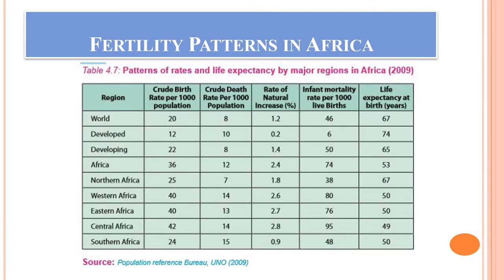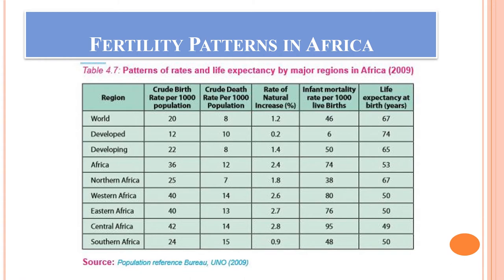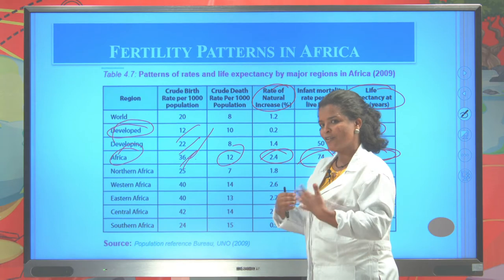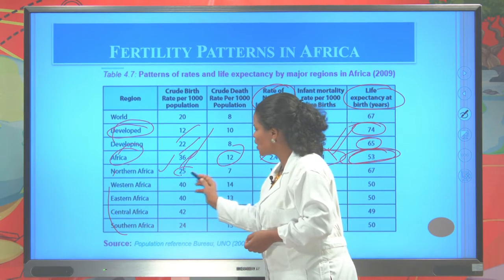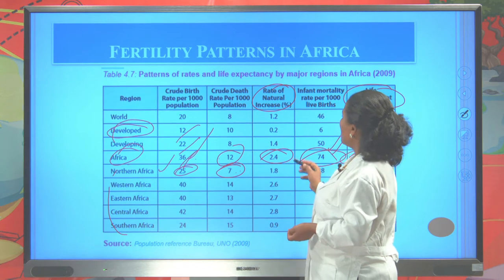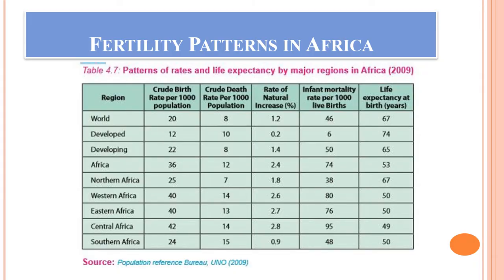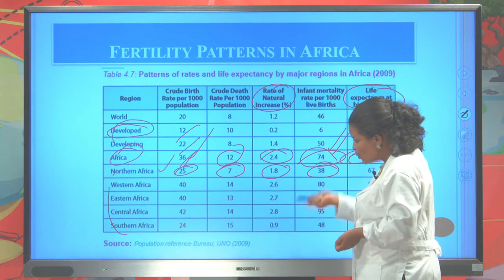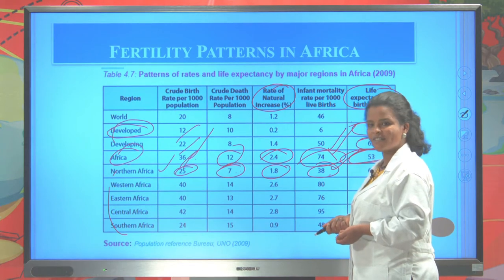The infant deaths in Africa are very high because African countries have low economic status, causing more infant deaths each year. The life expectancy of Africa is 53 years — fertility rate is high but life expectancy is very short. In North Africa, the crude birth rate is 25 per thousand and the death rate is only 7 per thousand, showing North Africa is a more developed region. The rate of natural increase of Northern Africa is 1.8, and the infant mortality rate is only 38 per thousand.